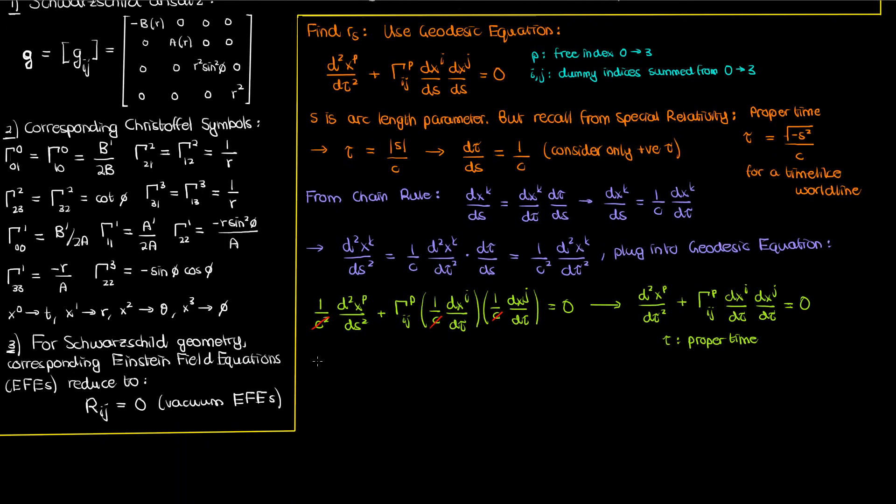Anyway, let's use this geodesic equation in proper time and look at the coordinate corresponding to P equals 1, which in this case is the radial coordinate R, so we basically replace the X^P or the X^1 by R. If we isolate the second tau derivative in R from the geodesic equation, this is what we have.